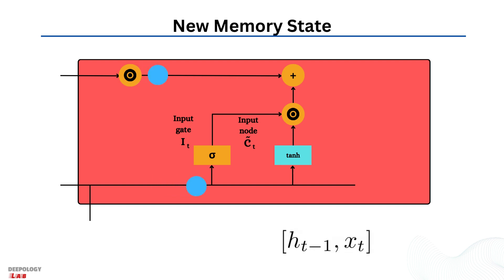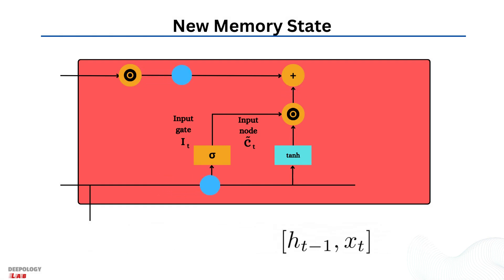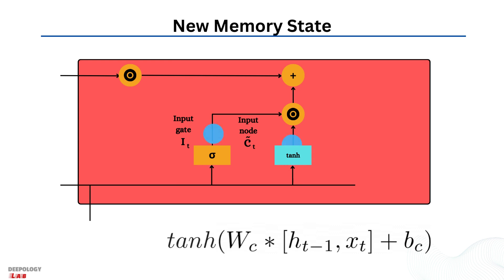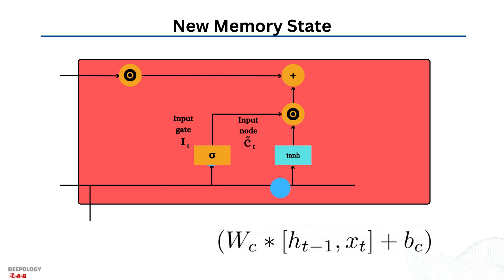Similar to the forget gate, a low output value from the input gate means the corresponding element of the cell state should not be updated. The new memory network uses a tanh activation function and has been trained to create a new memory update vector by combining the previous hidden state and the current input data. This vector carries information from the input data and considers the context of the previous hidden state. The tanh activation function is used because its values lie in the range of minus 1 to 1, and this ability to produce negative values is essential in reducing the influence of a component in the cell state.